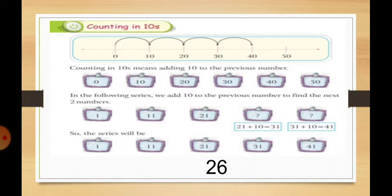Next, in the following series, we add 10 to the previous number to find the next two numbers. See this — the numbers are 1, 11, 21, and we need to find the remaining two. 1 plus 10 equals 11, 11 plus 10 equals 21, 21 plus 10 equals 31, 31 plus 10 equals 41.